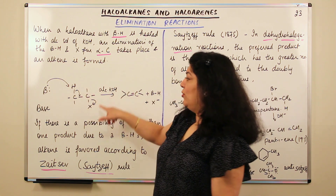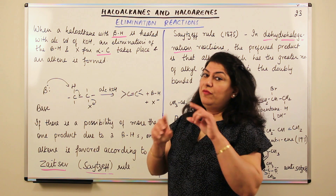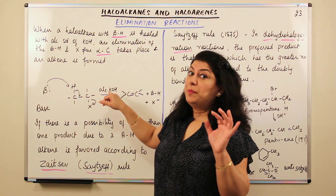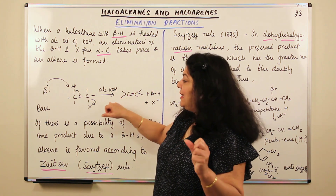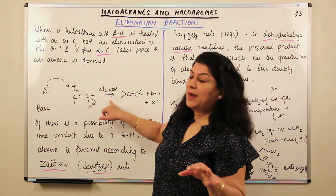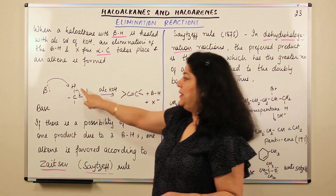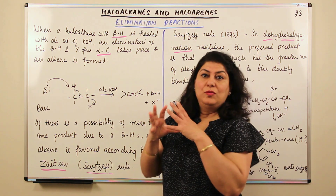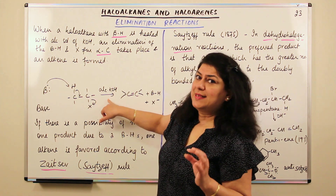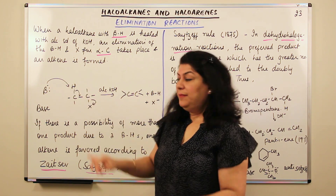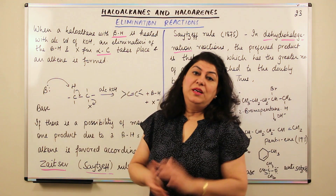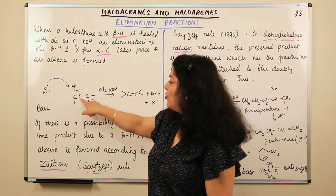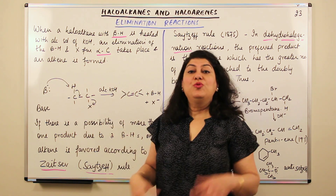So when a haloalkane with a beta hydrogen — the hydrogen attached to the beta carbon — is heated with an alcoholic potassium hydroxide solution, which is a strong base, an elimination of the beta hydrogen and the halogen from the alpha carbon takes place. When you remove two components, those electrons form a second bond, and what you get is an alkene.